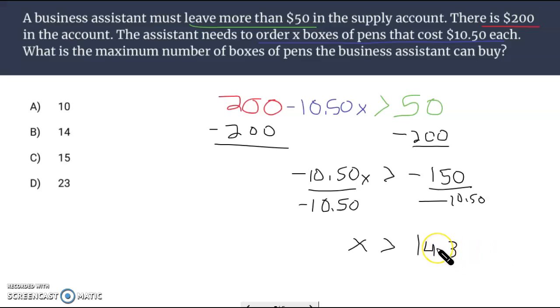So the number of boxes you can order has to be greater than 14.3. Okay. 14.3. We want to, we're going to choose choice B. All right, that's our video. Thank you for watching. Have a great day. See you next time.